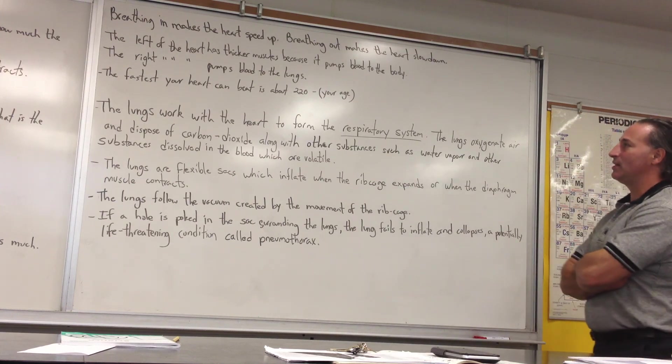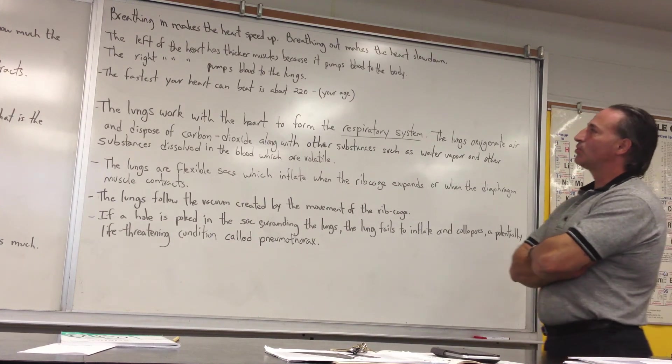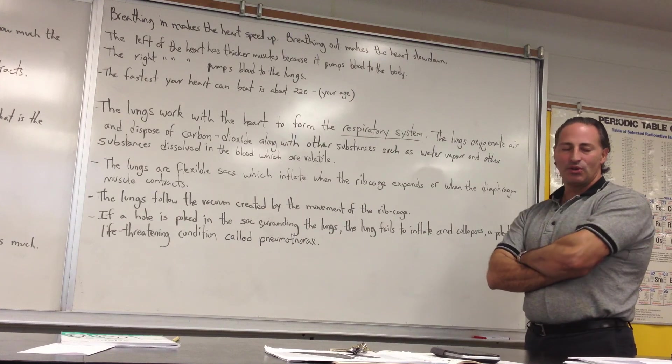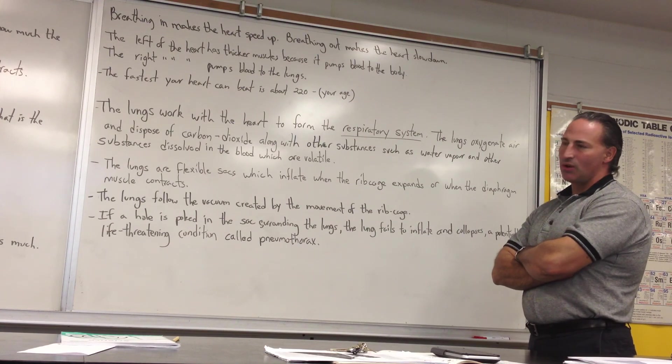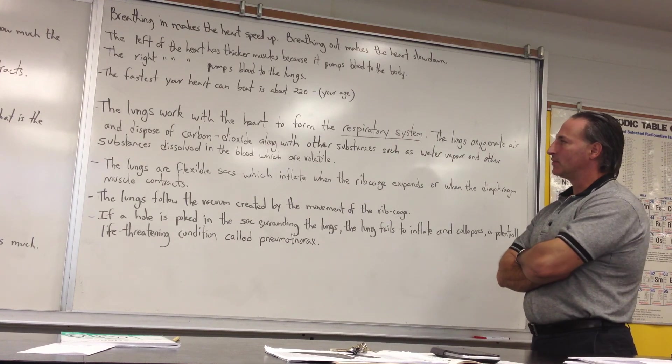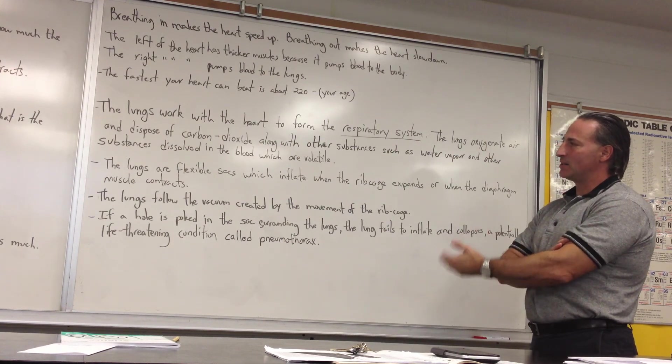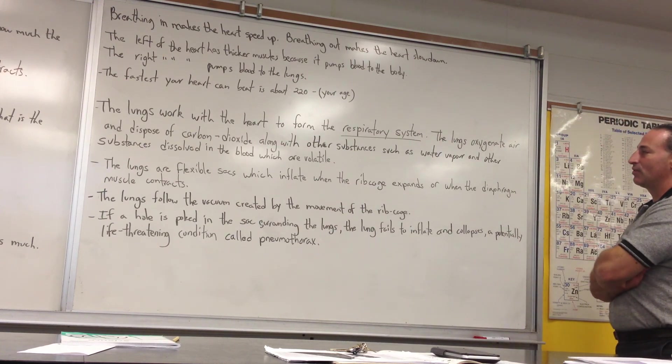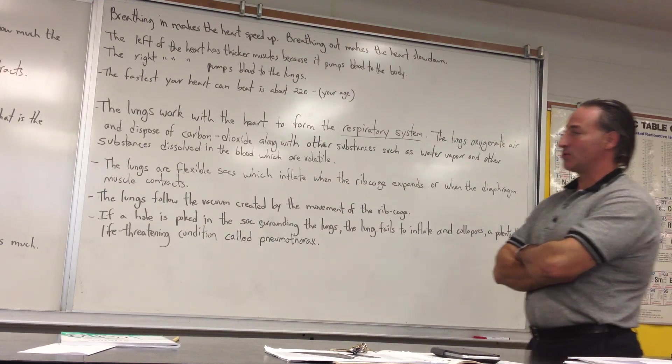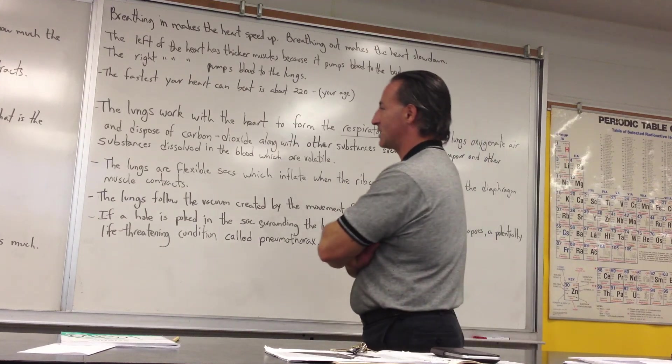The fastest your heart can beat is about 220 minus your age. So, if you're 15 years old, your maximum heart rate is roughly 205 beats per minute. And that capacity tends to diminish as you get older, and this is why older people have to work more carefully around their target heart rate, so that they don't overtax themselves.